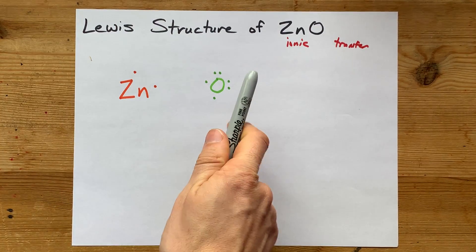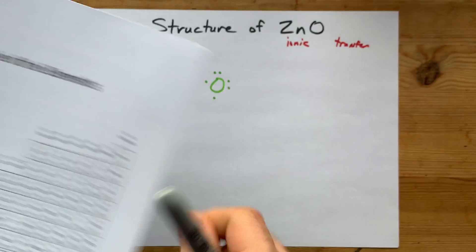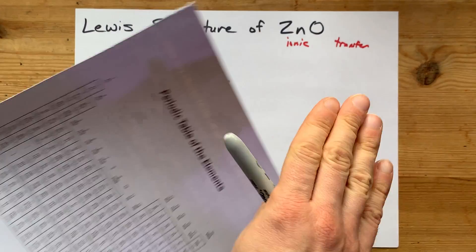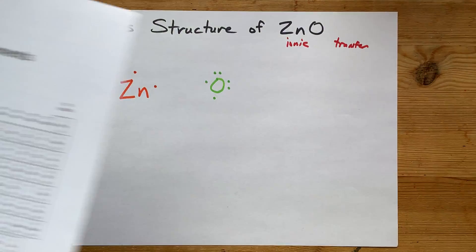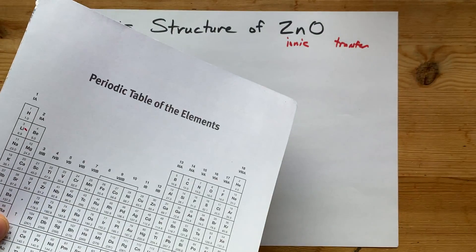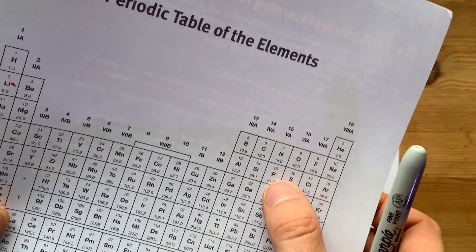Now, oxygen actually does satisfy the octet rule all of the time. I've never seen an exception to the octet rule for oxygen. I take that back. But anyways,